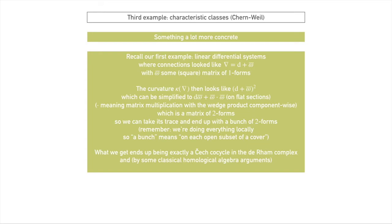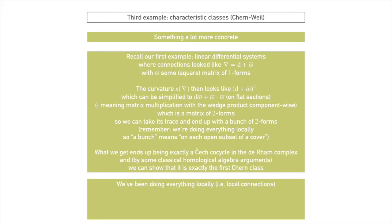If you do some classical homological algebra using Ext, and follow through what it means to get a splitting of a certain exact sequence, you can actually prove that the Čech cocycle you get by taking the trace of the curvature of a connection is exactly the first Chern class of your bundle. The Chern class is a characteristic class in the setting where we have some kind of holomorphic structure. This is a concrete example of what we've been saying: the first Chern class is exactly given by the trace of the curvature of a connection. The trace is what's called an invariant polynomial, and this is really what Chern-Weil theory says — if you take invariant polynomials on curvatures, you get characteristic classes.